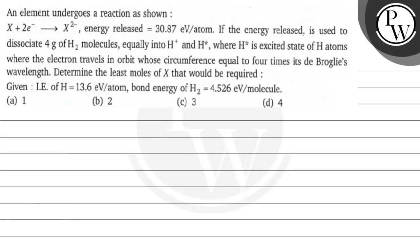Let's read this question. An element undergoes a reaction as shown: X + 2e⁻ → X²⁻, energy released = 30.87 electron volt per atom. If the energy released is used to dissociate 4 gram of hydrogen molecules equally into H⁺ and H*, where H* is the excited state of hydrogen atoms where the electron travels in an orbit whose circumference equals 4 times its de Broglie wavelength. Determine the least moles of X that would be required.